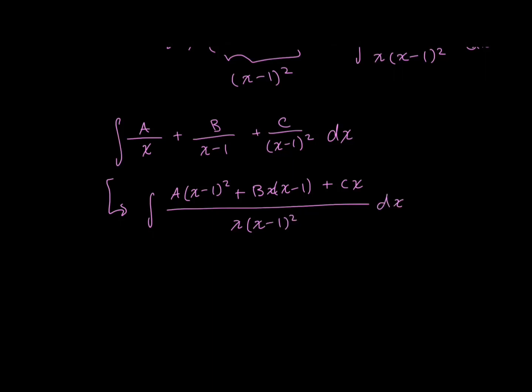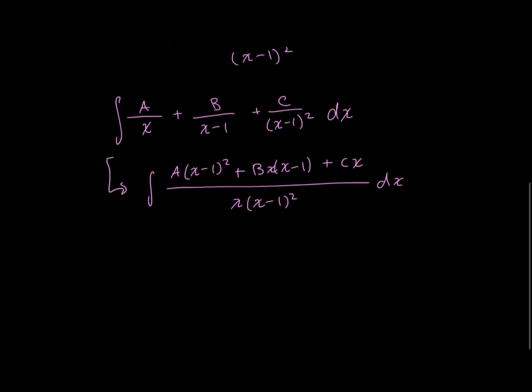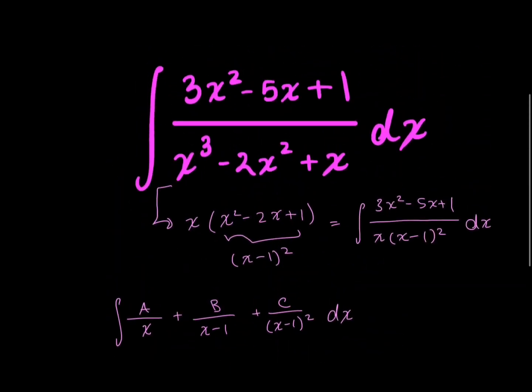So A times x minus 1 squared plus B times x times x minus 1 plus C times x all over my original denominator, x times x minus 1 squared dx. And again, we don't really care about the denominator at this point. What I really care about is what I have over here on top, and I'm going to be equating it to my original numerator.